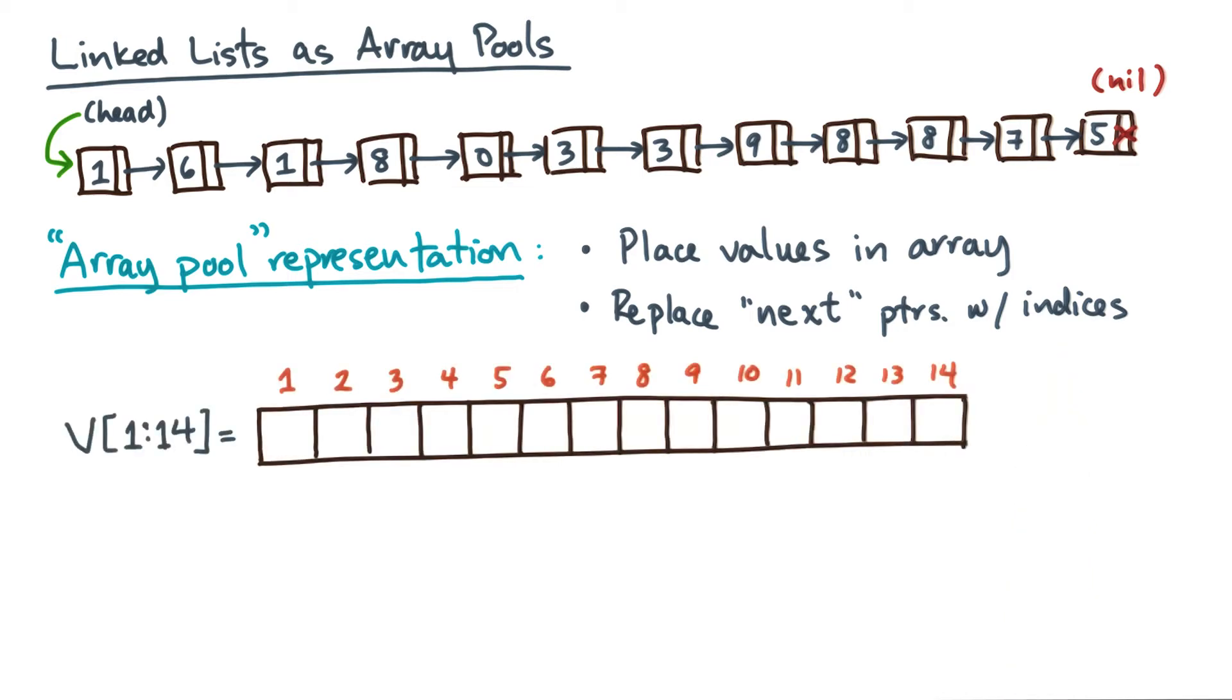As an example, suppose I allocate an array to hold the values. Let's call this array v. Now, notice that our input list has 12 nodes, even though the array has 14 spaces. So in general, we'll let our array pool representation be at least the size of our input list.